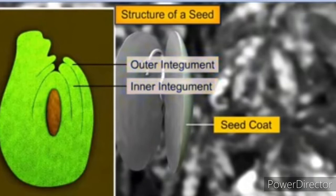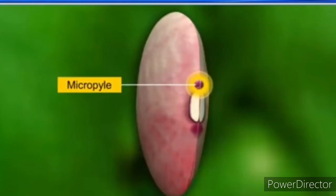The integuments of the ovules form outer coverings that are hard and become the protective seed coat. The micropyle remains as a small pore in the seed coat. This facilitates entry of oxygen and water into the seed during germination. As the seed matures, its water content is reduced and seeds become relatively dry.